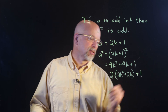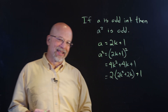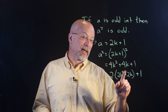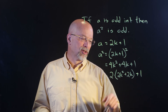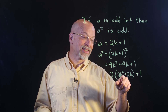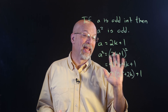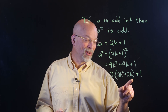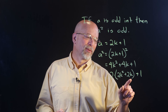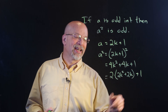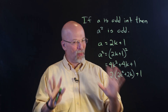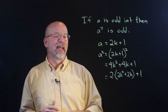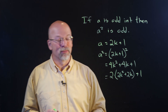So we have 2 times (2K squared plus 2K) plus 1. Going back to the definition of an odd integer: K is an integer, so K squared is an integer. 2 times 2K squared is an integer, and 2K is also an integer. Integer plus integer is an integer — inside the parentheses we have an integer. So 2 times this integer plus 1 means A squared must be odd.